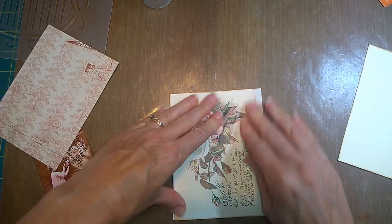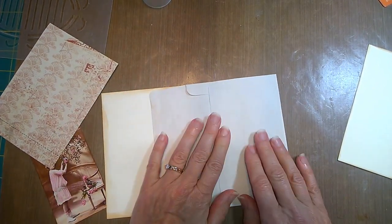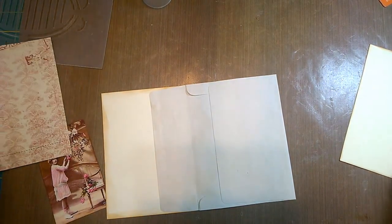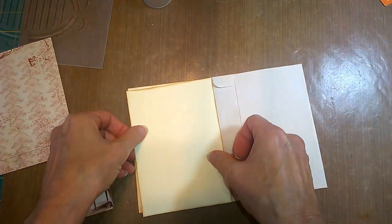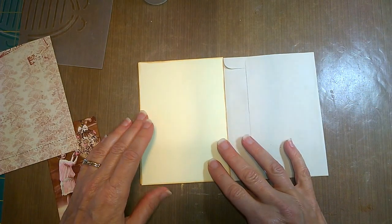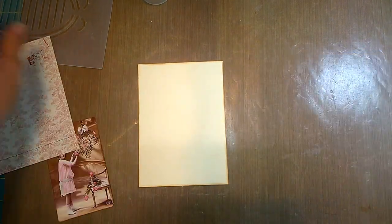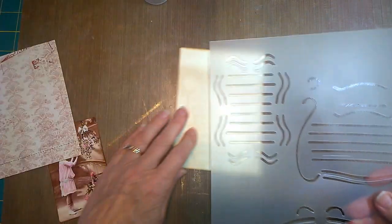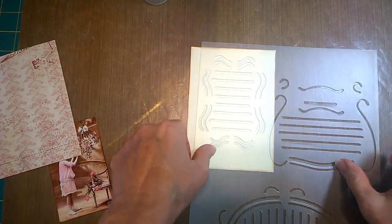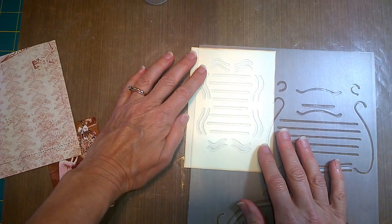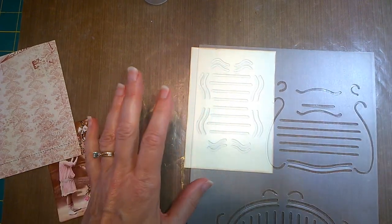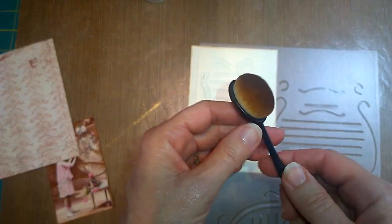Now, on the inside here, I of course need to put down this part here, the flap. And this is going to be the journaling area. And I have a stencil here to kind of give some little lines on here that I'm going to stencil on here. And I found this wonderful tip.